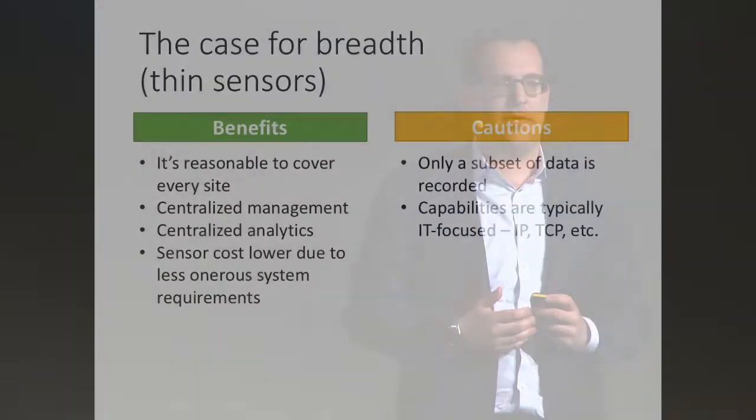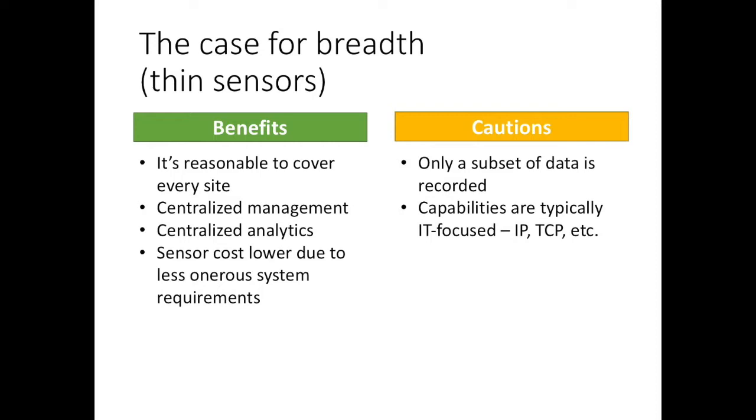Pros of the thin approach: it's reasonable to cover every site with standardized, simpler deployments. Centralized management and analytics are possible, and lighter-weight hardware requirements make virtualization attractive at the IT ingress-egress point. The drawbacks: you only get a subset of the data. With something like Bro, you have DNP3 and Modbus signatures, but not the depth of an ICS-specific solution.